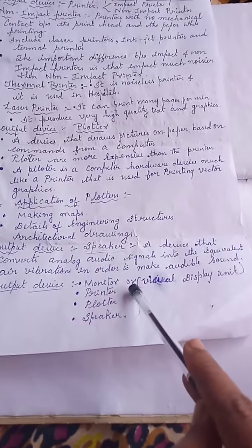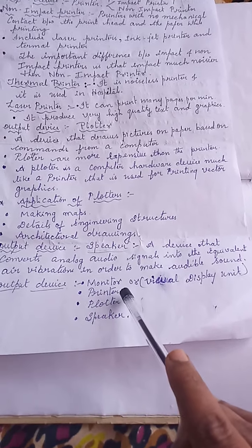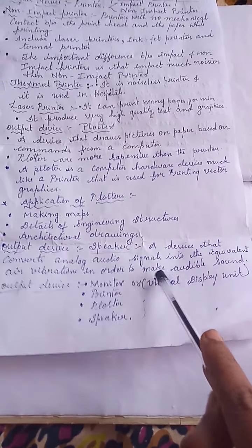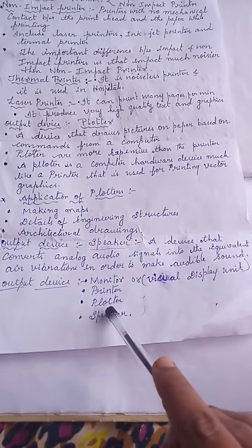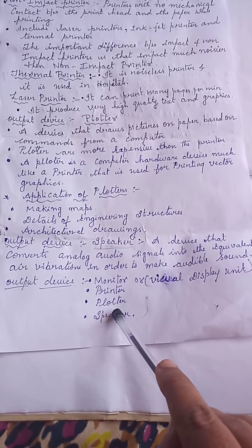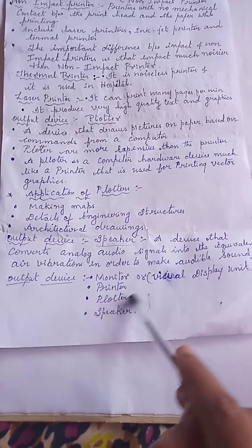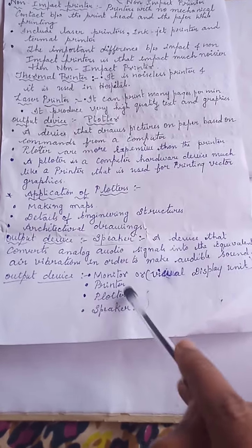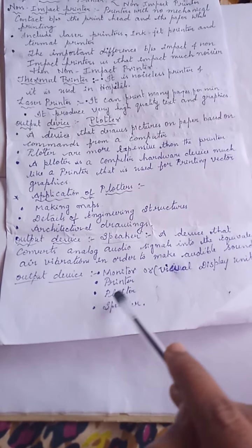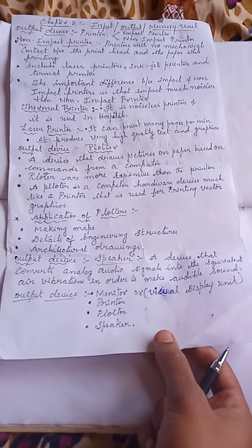Let us recap the output devices we have discussed: Monitor — also known as visual display unit. Printer — two types, impact printer and non-impact printer. Plotter — used to draw pictures on paper; engineers and architects use plotters to print vector graphics. Speaker — used to listen to audio.